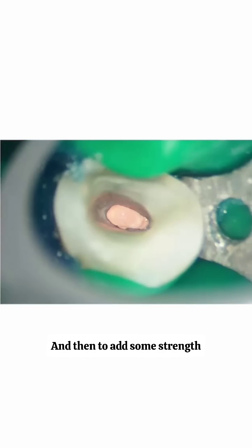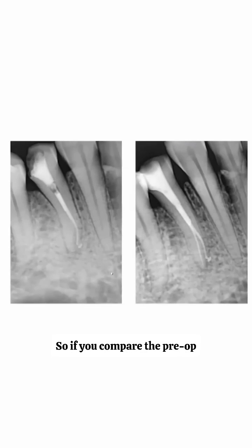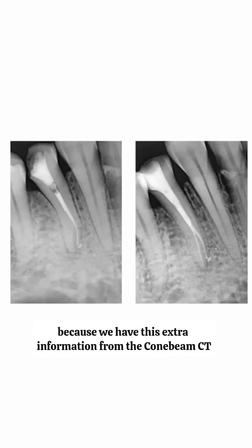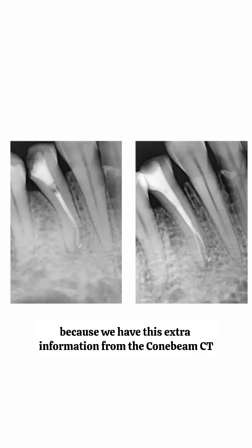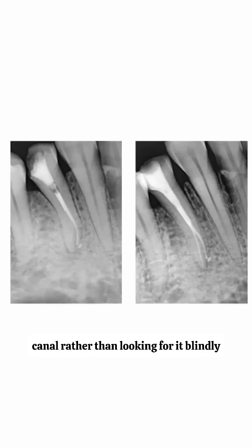Once we found that extra lingual canal, we clean, shape, and obturate it. Then, to add some strength, we place a fiberglass post and seal it with a composite core. Comparing the pre-op and the post-op, you can see we handled this conservatively. One of the main reasons we could treat it conservatively is because the cone beam CT told us to look lingually for the missed canal rather than searching for it blindly.